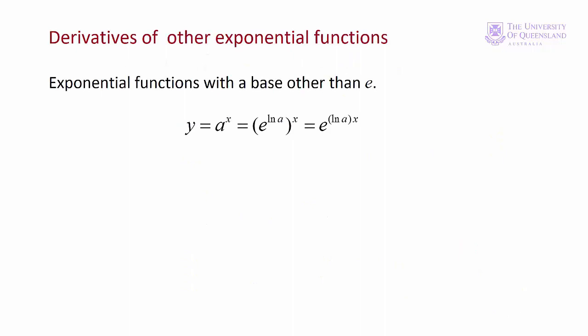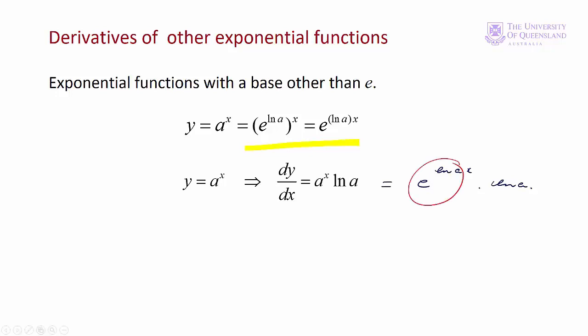We saw in lecture 2 that we can have exponential functions for bases other than e — for example, y = a^x. Remember we can convert that to base e: that's equal to e^(ln(a)·x). Finding the derivative is just an extension of our last rule. ln(a) is just a constant, so the result is e^(ln(a)·x) · ln(a), and we convert e^(ln(a)) back to base a. When we have a base other than e, first convert the function to base e, then proceed as normal, and at the end convert back to the original base.